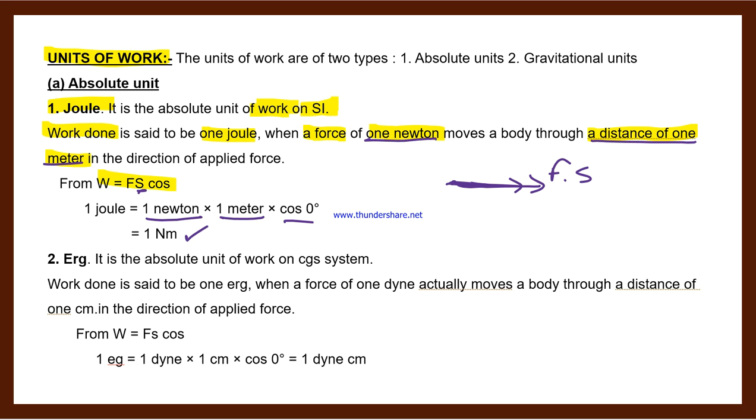Why cos zero degree? Because force is applied in this direction, so force's direction and displacement are in the same direction, so angle between both vectors is zero. Cos zero equals one, so we get one newton meter as the answer. In the CGS system, the unit of work is erg.